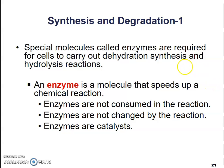Special molecules called enzymes are required for cells to carry out dehydration synthesis and hydrolysis — these enzymes are what make it happen. An enzyme is a molecule that speeds up a chemical reaction. Without these enzymes, the reaction would require too much energy and wouldn't happen naturally. Enzymes are not consumed in the reaction — they're not used up, they're left over at the end and can be reused again and again. They are known as catalysts and they lower the energy required for the reaction to take place so it can happen much more quickly.